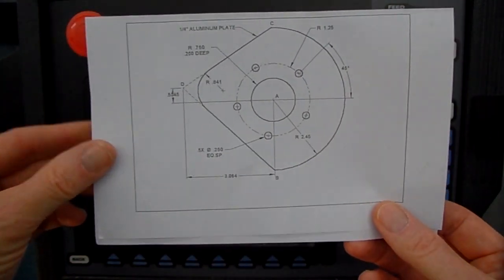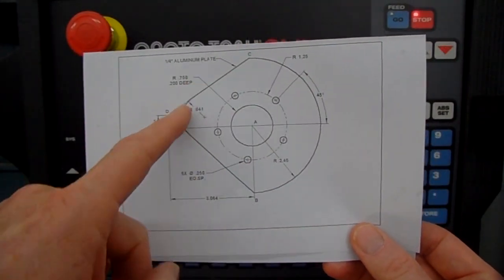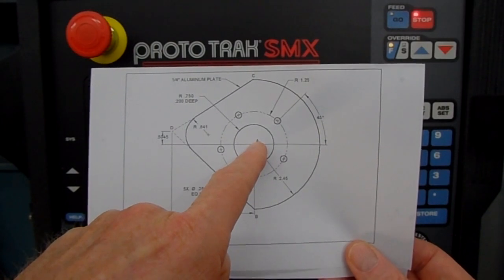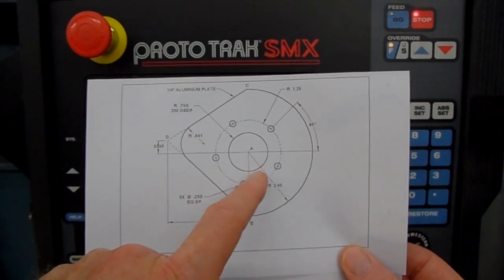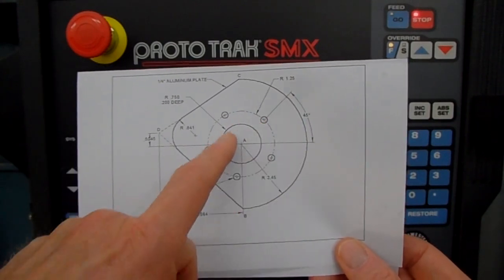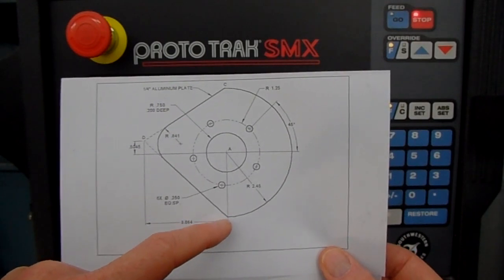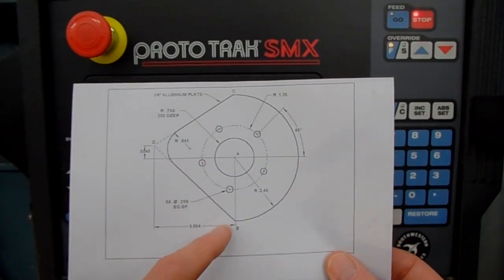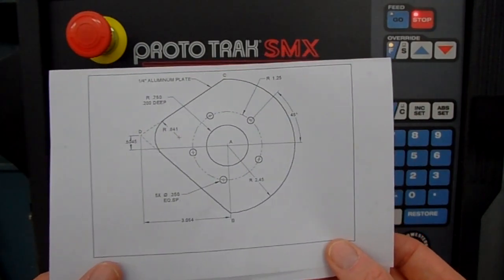We're also going to machine the outside shape. The zero point will be set at X0, Y0, right in the center. We'll do the bolt hole pattern first, the circular pocket second, and then the outside shape, which will be an arc event, a mill event, and another mill event. We're on the two-axis side of the controls, so the programming will go fairly quick.